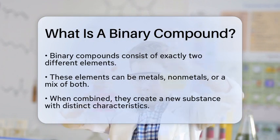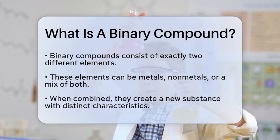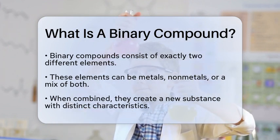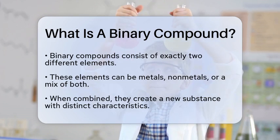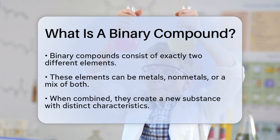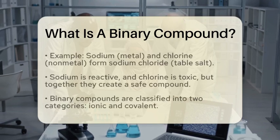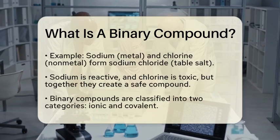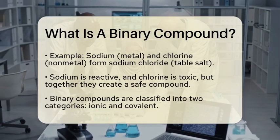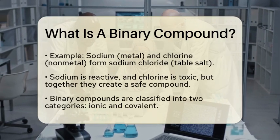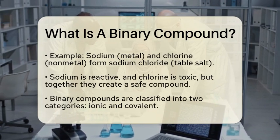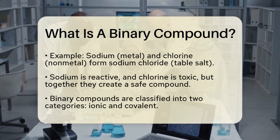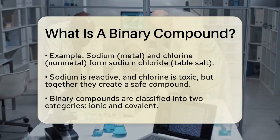A binary compound is a chemical compound that consists of exactly two different elements. These elements can be metals, nonmetals, or a combination of both. When these elements bond together, they form a new substance with its own characteristics that are often different from those of the individual elements.